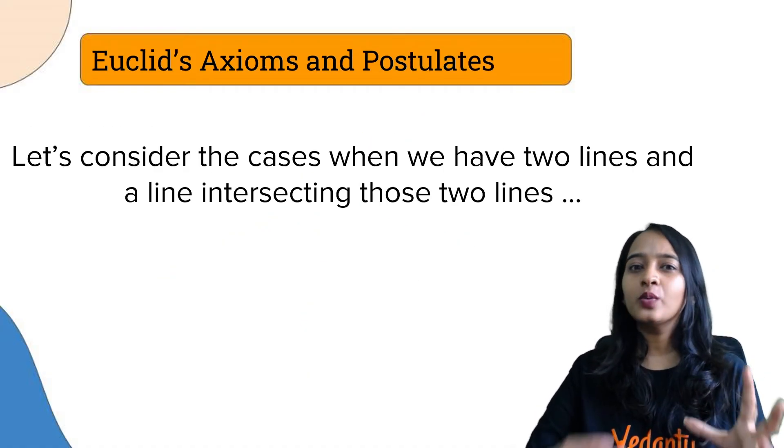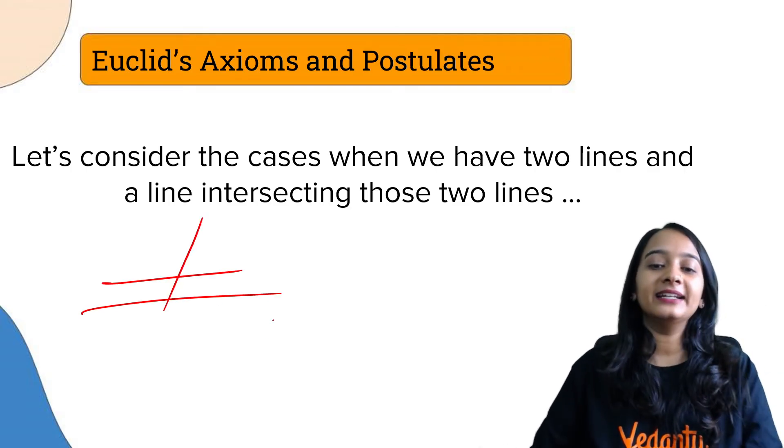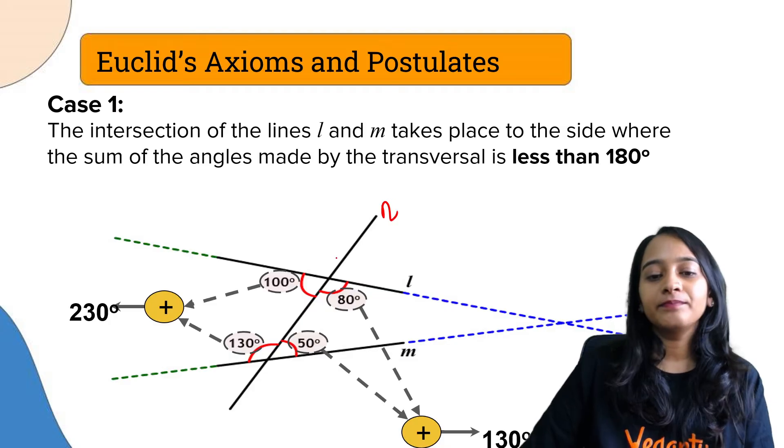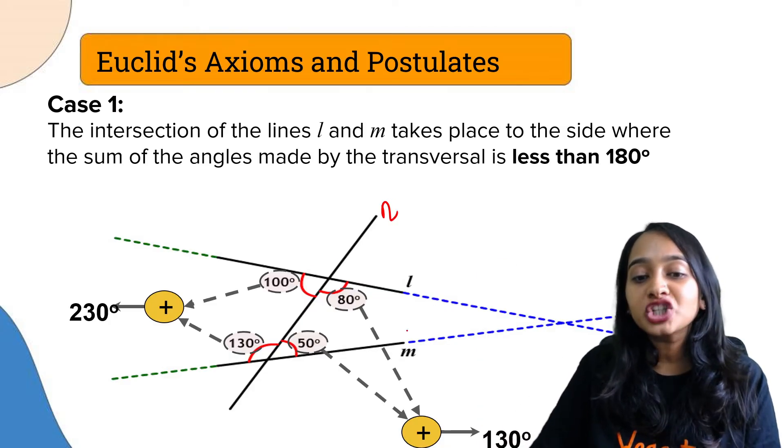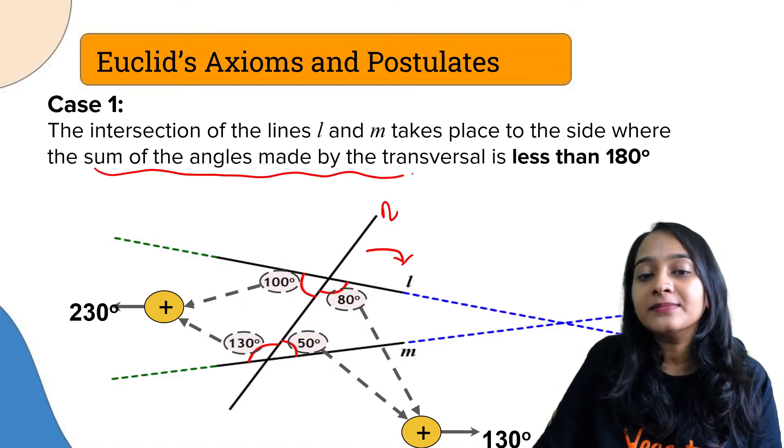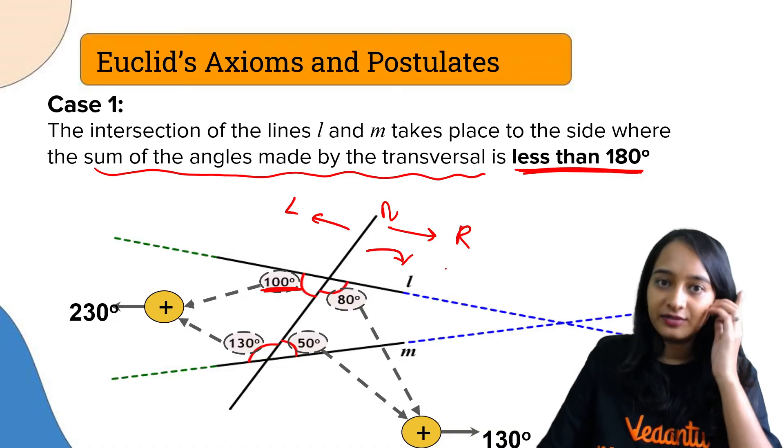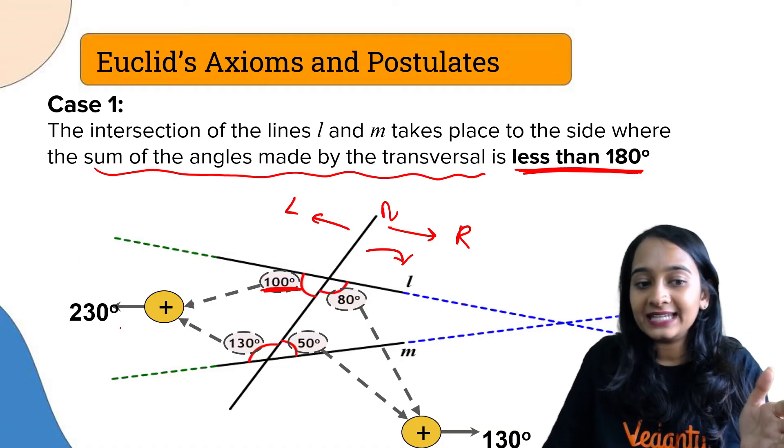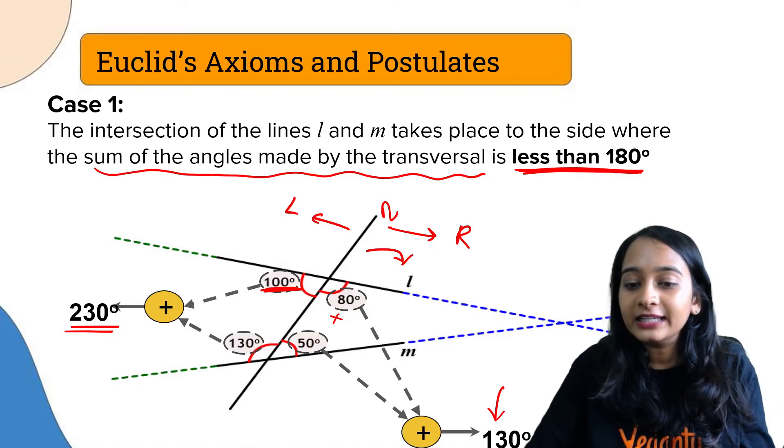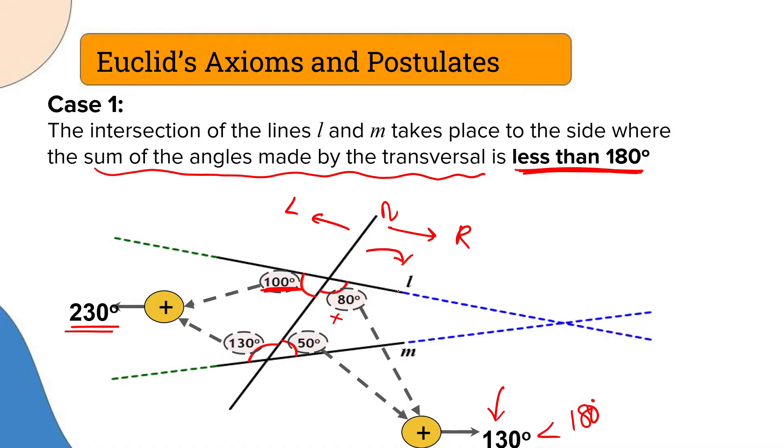Now, fifth postulate, which is actually one of the major postulates. Let us consider cases where we have two lines and a line intersecting both of them - a transversal. The intersection of the two lines takes place on that side of the transversal where the sum of the angles made by the transversal is less than 180 degrees. Here, this is the left side and this is the right side of the transversal.